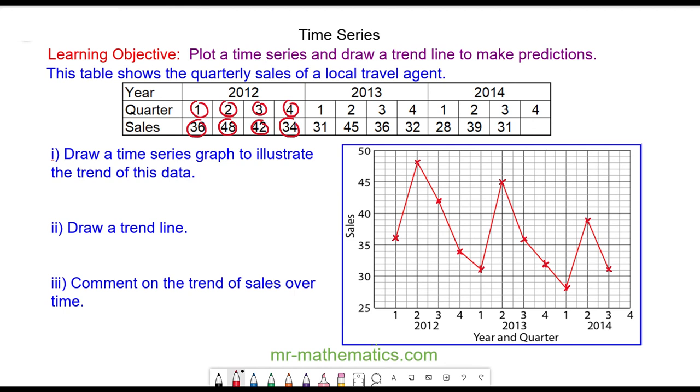For part two the trend line again is a straight line which shows the trend of the data. And finally for part three, the trend line shows the sales are decreasing or a downward trend over time.